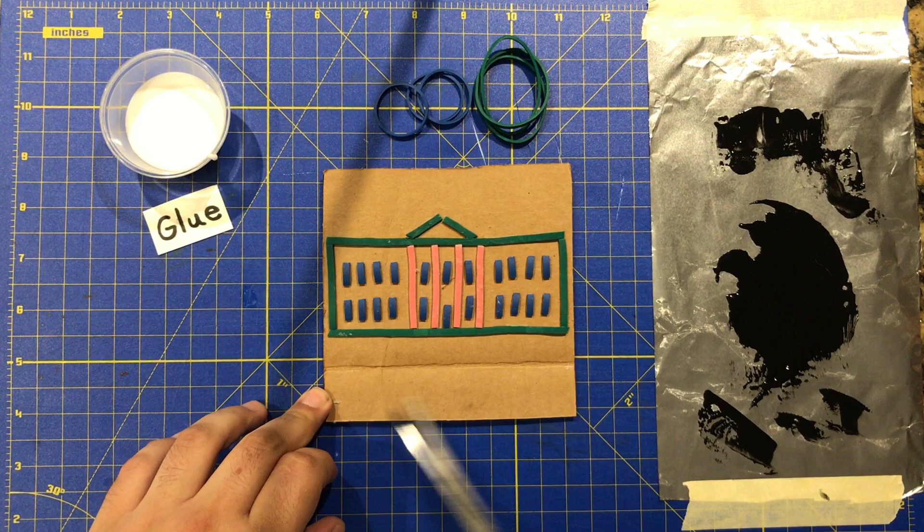The problem with the White House is that the cardboard is a little bit too big for it, and so when you try and ink, you're going to ink some of the cardboard by accident. I'm going to cut that off.